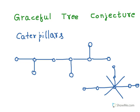This is not a caterpillar graph and this is a caterpillar graph. Now the homework problem is: show that caterpillars are graceful. That means every caterpillar graph has a graceful labeling.